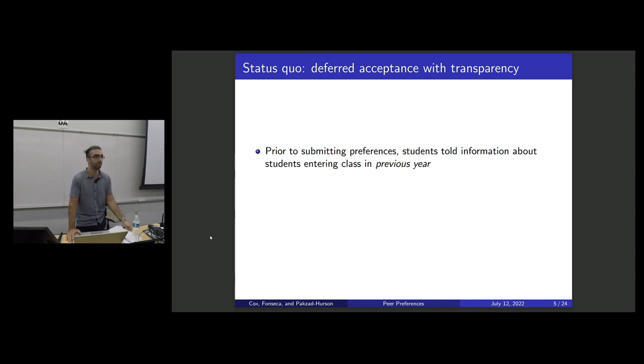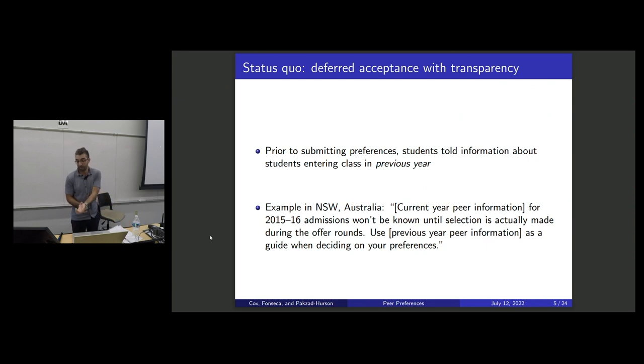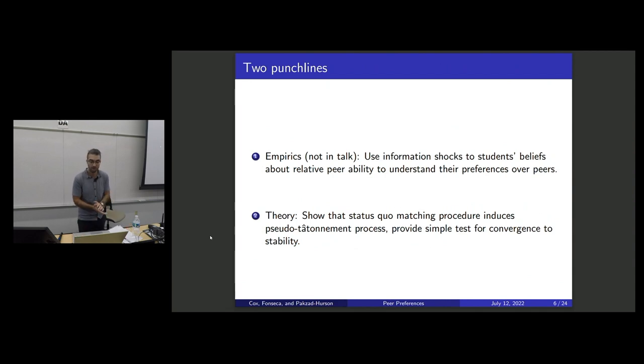There's this kind of learning from the past notion. In the U.S. there's U.S. News and World Report that publishes the SAT score and the GPA of the entering cohort each year. To give you an example from our empirical setting, New South Wales, Australia, they say the current year peer information won't be known until the selection is actually made. So use the previous year's information as a guide when deciding how to submit your preferences.